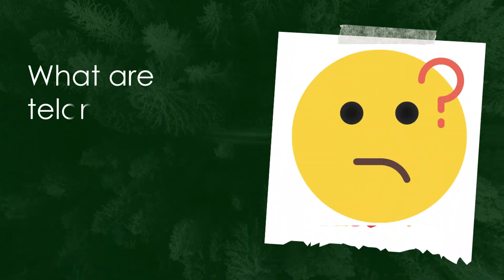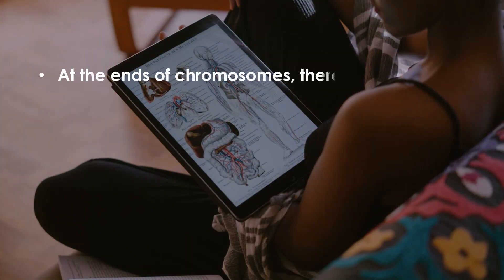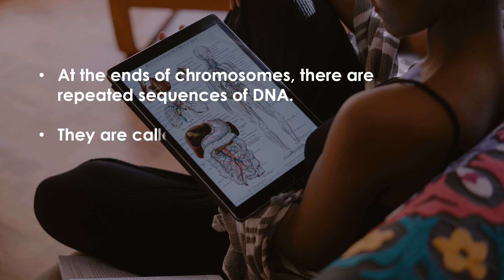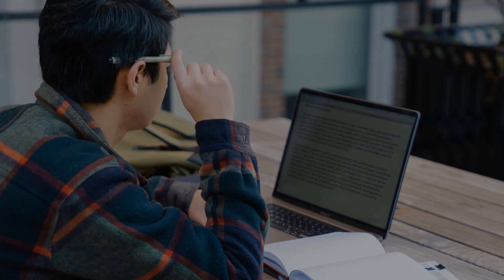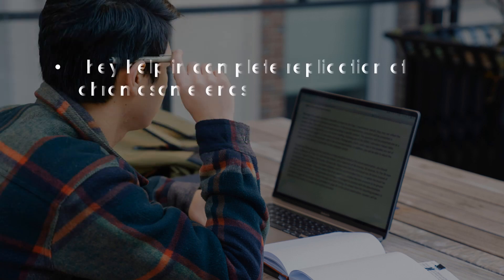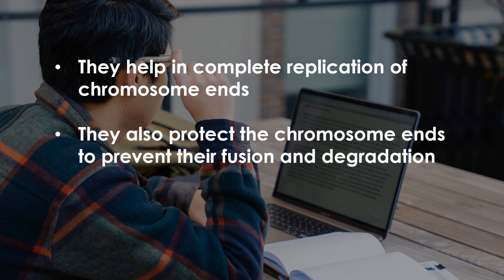What are telomeres? Telomeres are basically the ends of chromosomes that are repeated sequences of DNA. What is the function of telomeres? Telomeres help in the complete replication of chromosome ends. They also protect the chromosome ends from fusion and degradation.